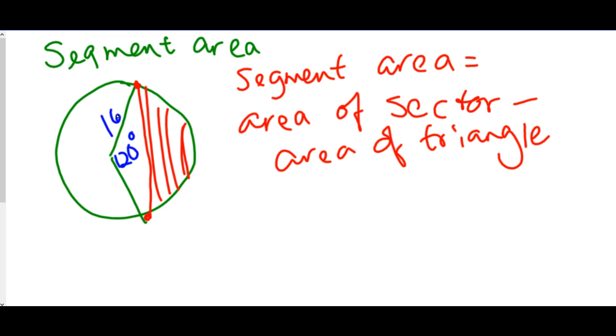Area of a sector, we just learned the formula for. Let's start with that. We know it's theta over 360 times pi times the radius squared. I'm going to get the decimal equivalent for this. It gives me 268.08. I'm going to keep a couple of decimals since we still have to minus the area of the triangle.